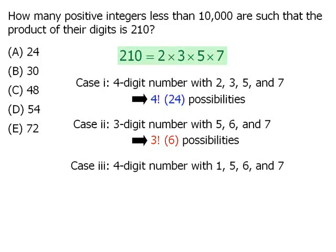And finally, in case three, we're going to look at four digit numbers that consist of a 1, a 5, a 6, and a 7. We know that there are 24 possibilities that suit this criterion.